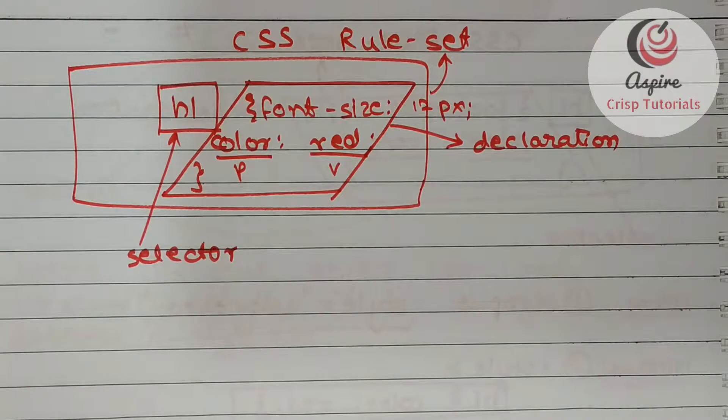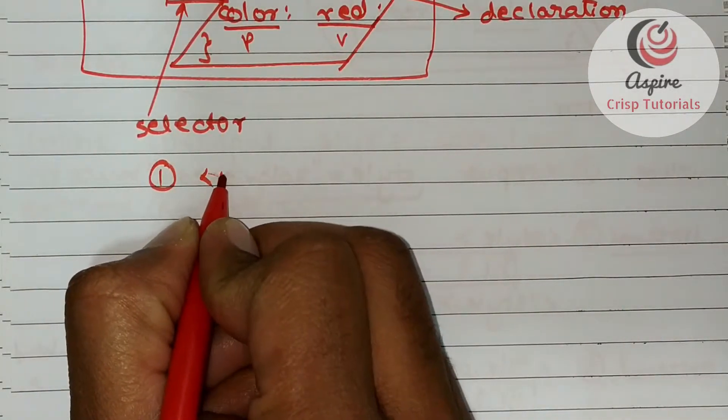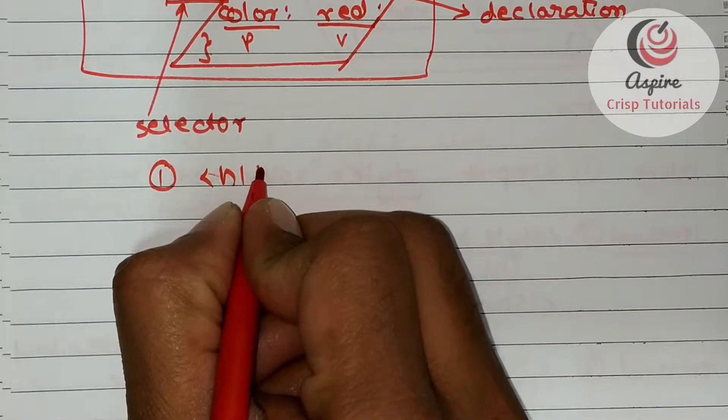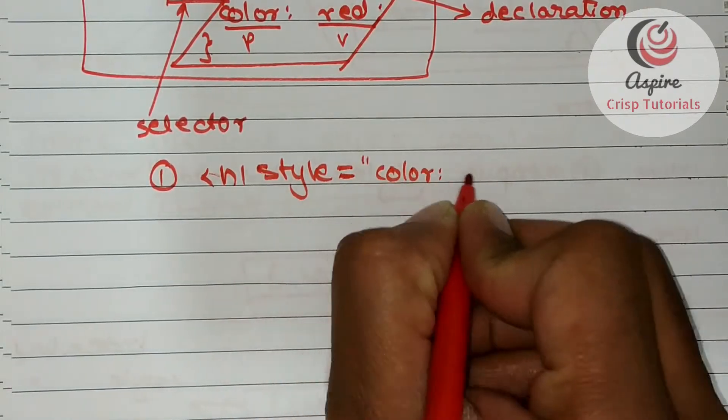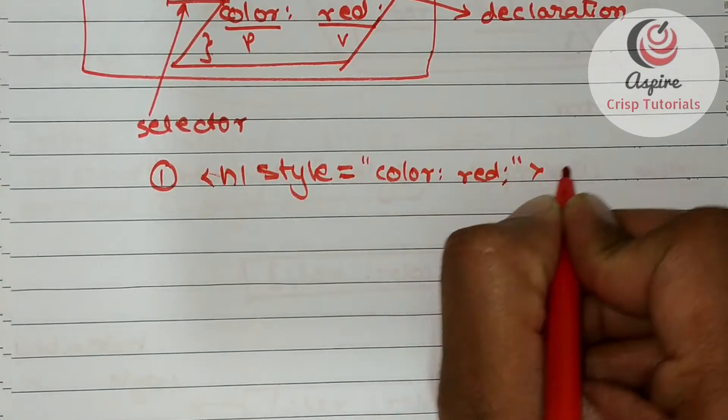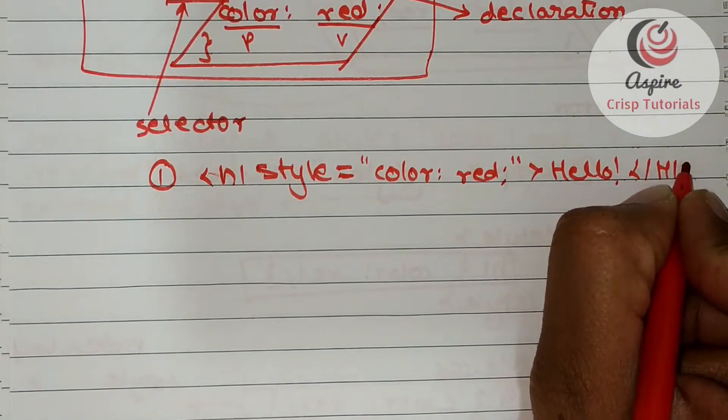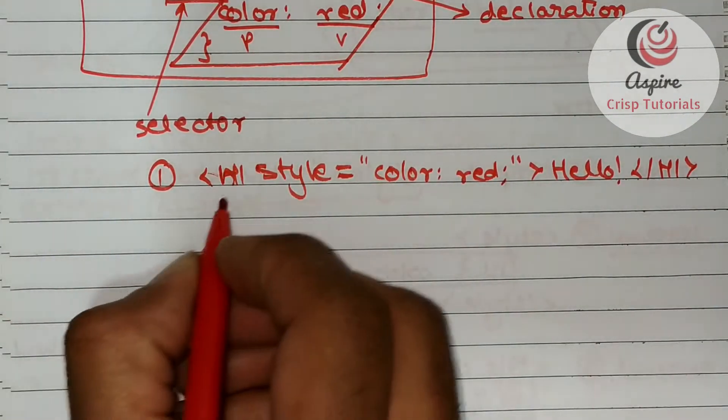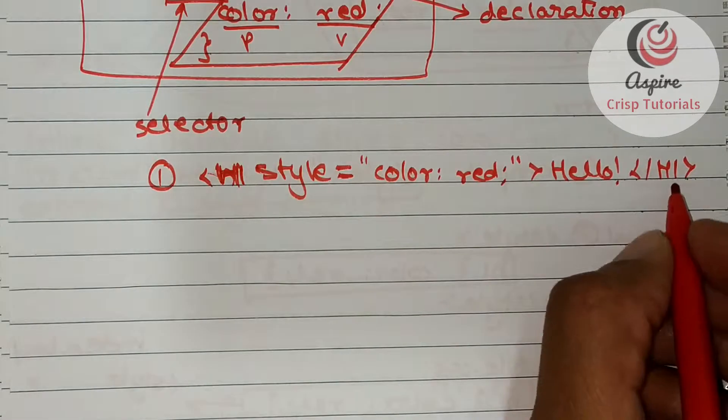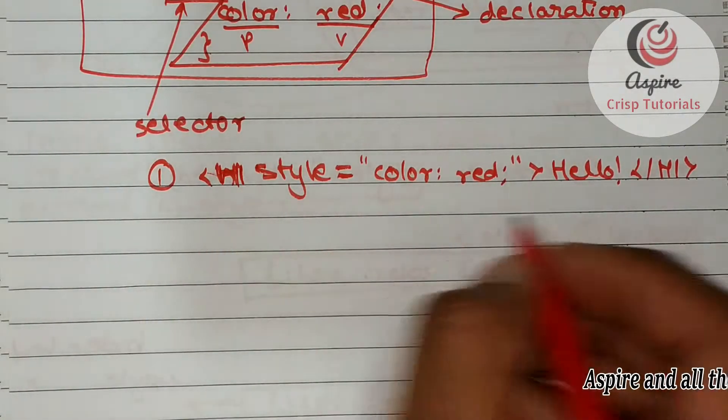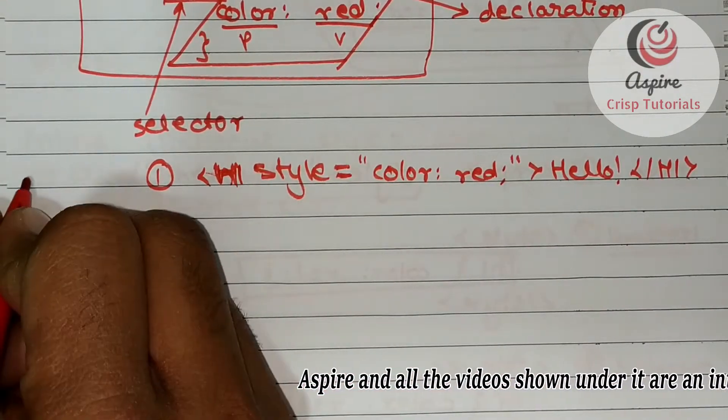There are three places. One is inside the HTML itself. Like say this is your h1 tag, here itself you can write style color should be red, and then you may say hello, whichever is your header, and you may just close this tag. Of course, you can keep HTML tags in either all caps or all lowercase, depends upon you. So this kind of styling within the HTML itself is called inline styling.